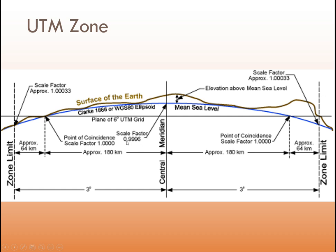There is also a scale factor to consider. At the central meridian the scale factor is approximately 0.9996, because the projection plane cuts through the earth's surface — the center is slightly compressed onto the map while the sides are stretched. The scale factor is greater than one on the sides and less than one in the center. Where the plane intersects the ellipsoid, the scale factor equals exactly one, meaning no distortion occurs at those two lines.